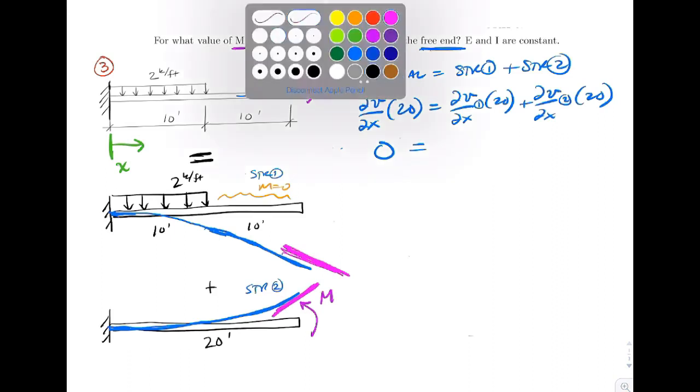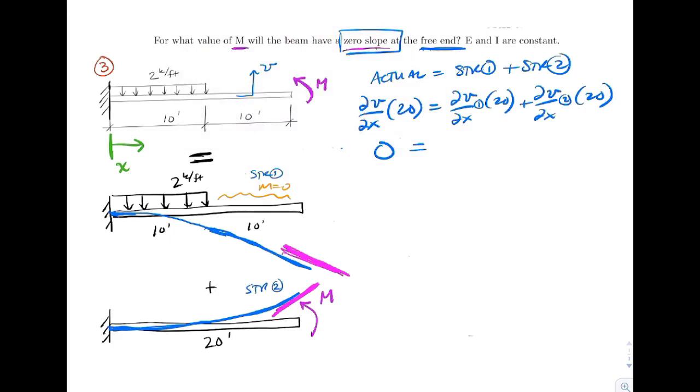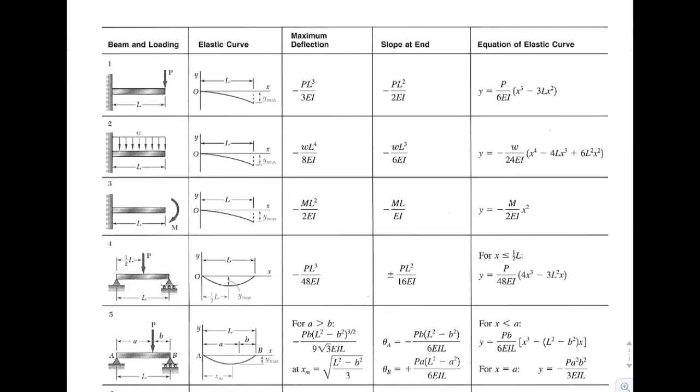So let's use our deflection table to help us here. Let's look at the cantilever section and a distributed load. It's a case two example. And right here we've got a slope at the end. And again, notice how the end is defined as where the distributed load stops.